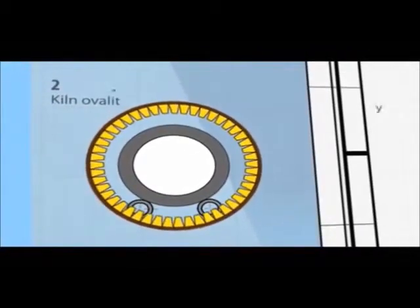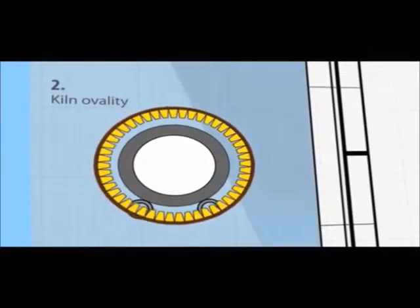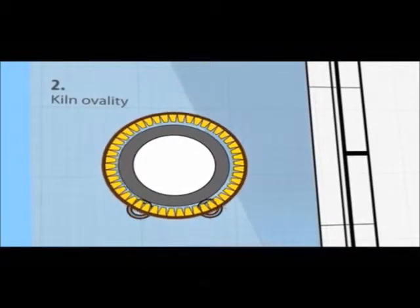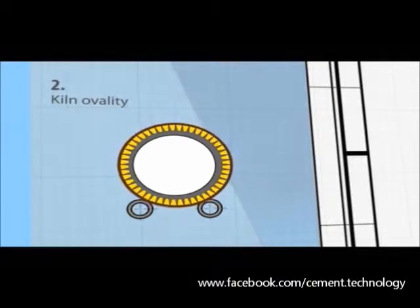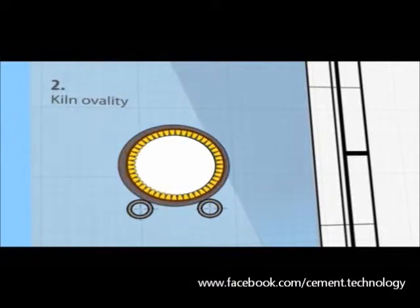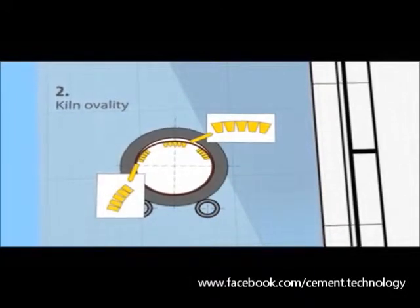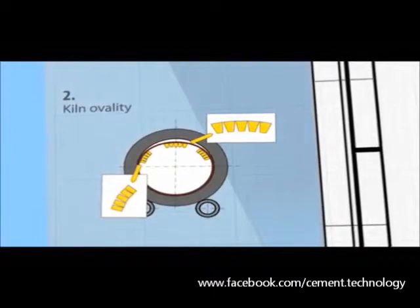2. Kiln ovality. Make sure that the kiln shell's radius of curvature does not change unacceptably during the kiln's rotation.